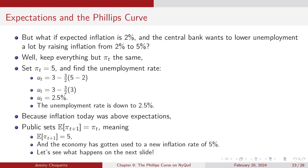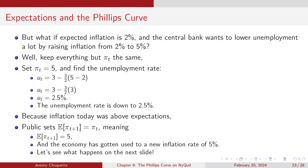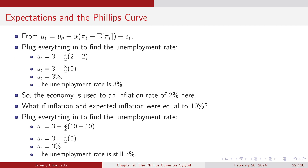But what if expected inflation is 2% and the central bank wants to lower unemployment, so they raise actual inflation to 5%? Everything else stays the same, but π_t is now 5% while expected inflation is still 2% — a 3% deviation. Now: U_t = 3 − (3/2)(5 − 2) = 3 − 4.5 = 2.5%. So inflation above expectations causes unemployment to drop.